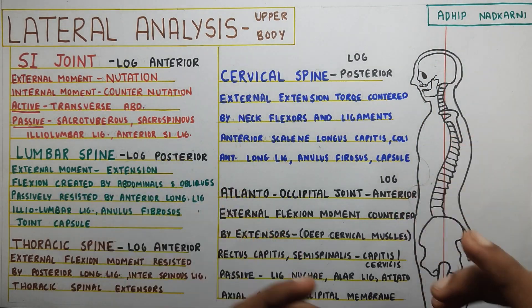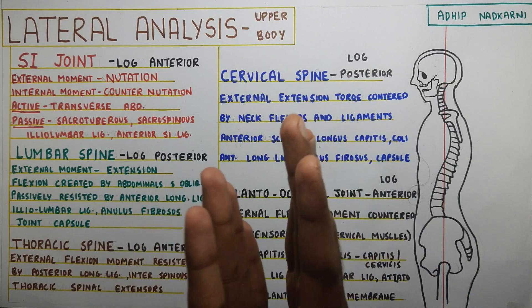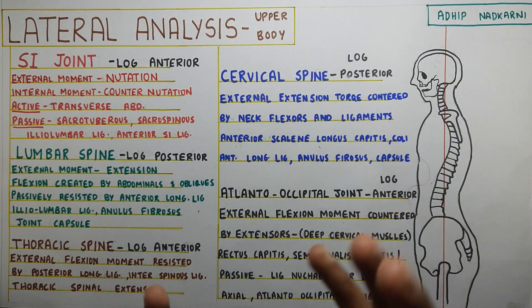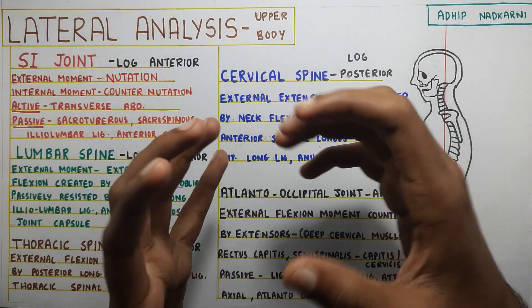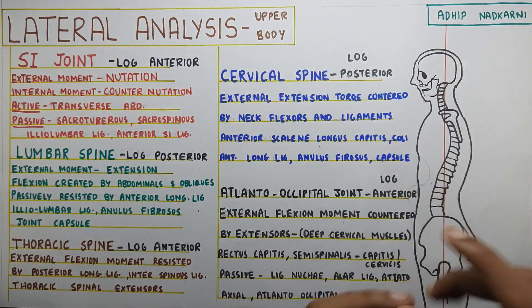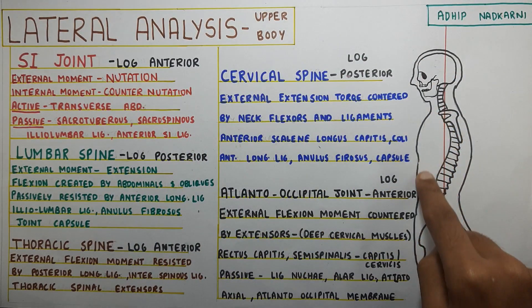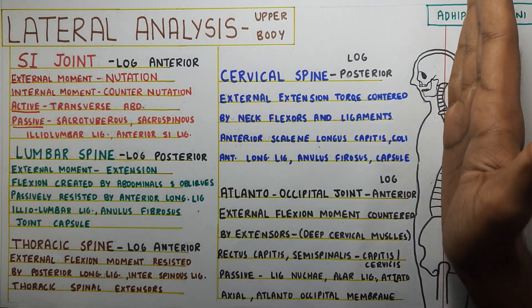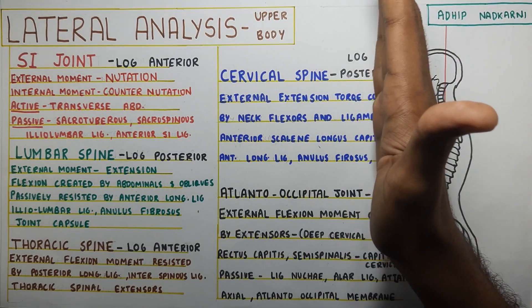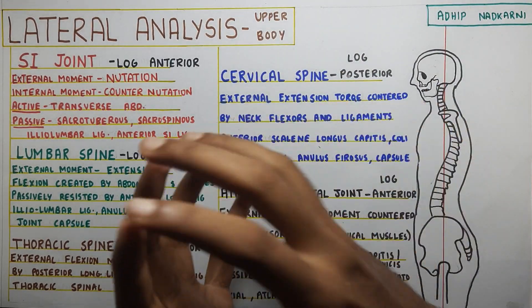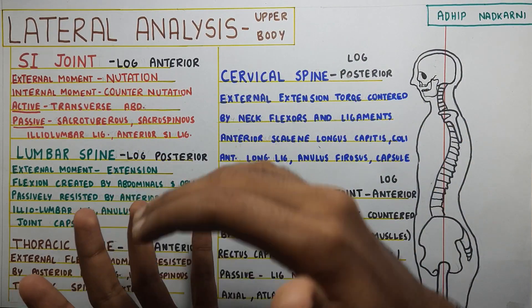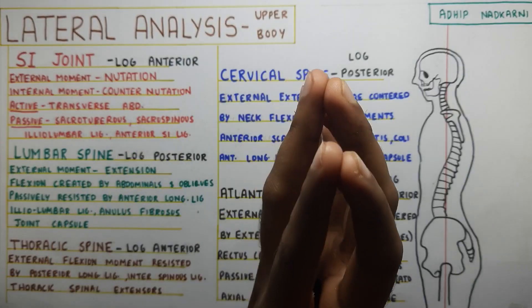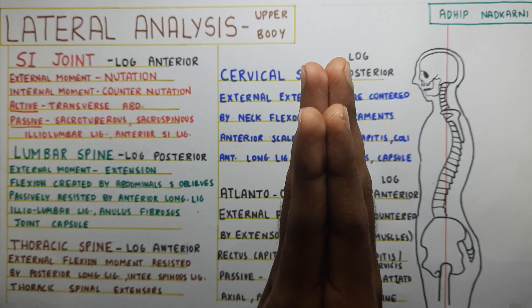What do we know about the line of gravity? Basically, if it goes posteriorly, gravity will be pulling your body into extension and all the flexor muscles will be acting to get you back into position. And if it goes anteriorly, gravity will be pulling it into flexion and all the extensor muscles will be working to get you back into the right position.